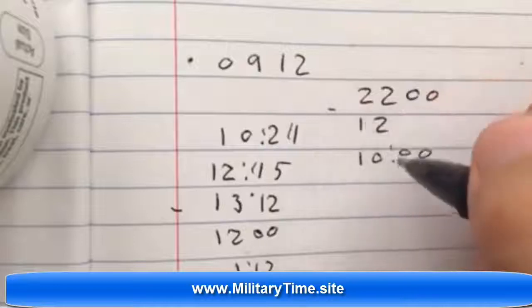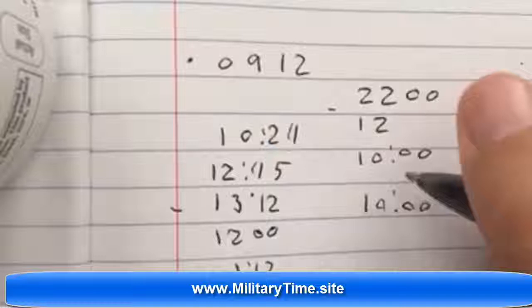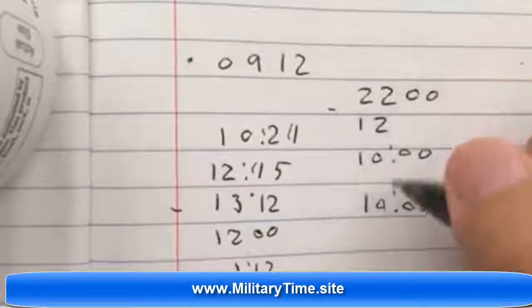So just take away the 12. And if you want to reverse that, say it's 10 o'clock at night and you have to write that in military time, you just add 12. You add 12 and you end up with 2200 hours. And that's it.